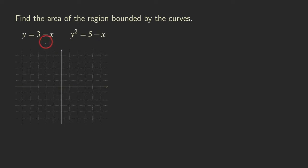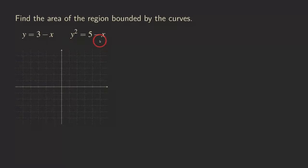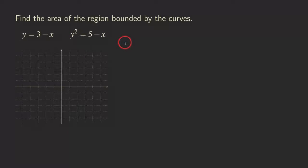One of the curves is actually a straight line, as you can see — this is a linear equation. And the other one is a sideways parabola because the square is on the y, not on the x. So we have a sideways parabola here.